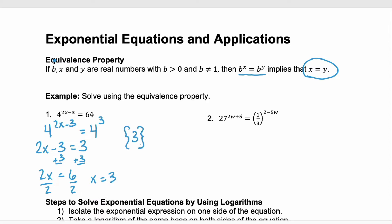Let's look at example 2. Here notice that we have an exponential expression on each side of the equal sign but the bases aren't the same. On the left the base is 27 and on the right the base is 1/3. Recall that 27 is equivalent to 3 cubed. And 1/3 would be the same as 3 to the power of negative 1. So 1/3 to the power of negative 3 would give us 27.